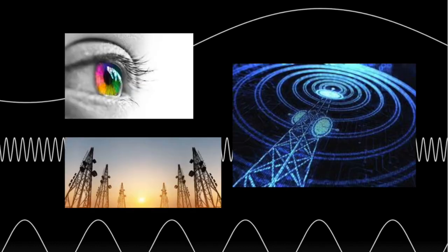Light, or electromagnetic energy, exists all around us and we experience its properties all the time. You might use visible light to perceive your surroundings or radio waves and microwaves to send signals.